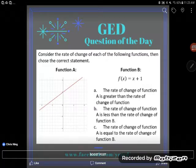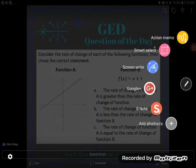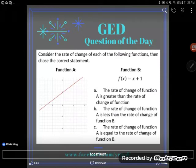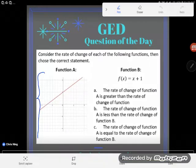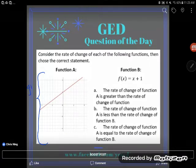Time for another GED question of the day. Let's read the problem. It says, consider the rate of change of each of the following functions, then choose the correct statement. So a lot of students lose their mind. They recognize that here they see a graph of a line. Let me get my pen out here. So they'll recognize this is a graph of a line, clearly. There's a line right there on a graph.